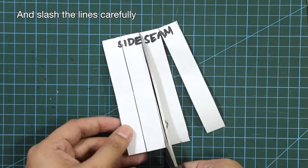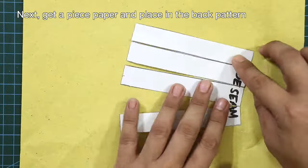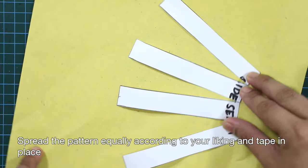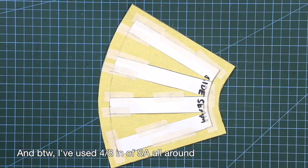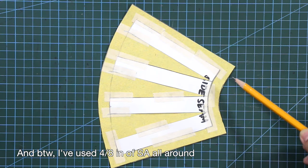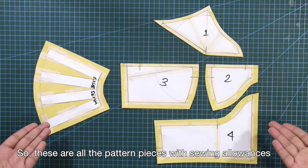I will slash the lines carefully. Next, get a piece of paper and place in the back pattern. Spread the pattern equally according to your liking and tape it in place. By the way, I've used 4/8 of an inch of sewing allowance all around for the back pattern.